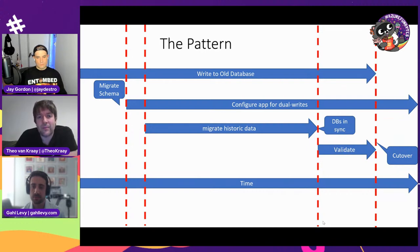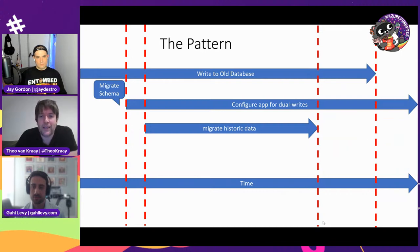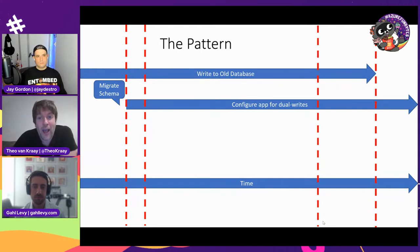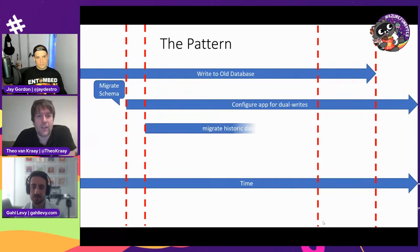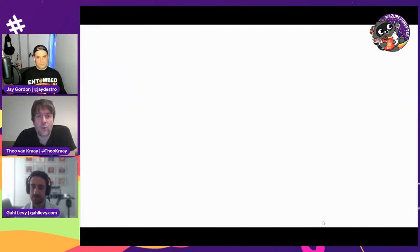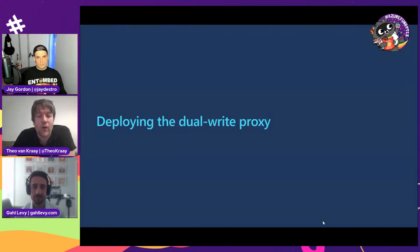The problem with this pattern is the stage of configuring your app — changing code to point to a different target everywhere you're doing updates can be invasive. If you've got a lot of applications hitting the same database, that's not very convenient. So what we've developed is an open source tool called the DualWrite Proxy.